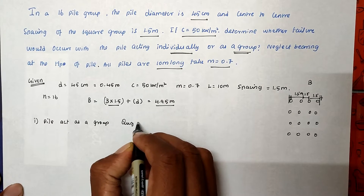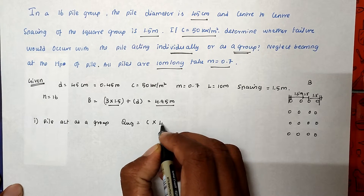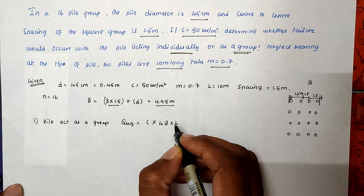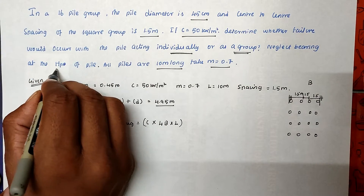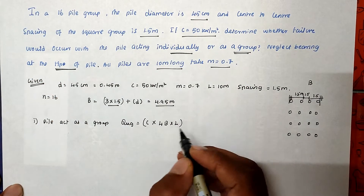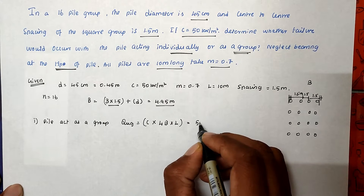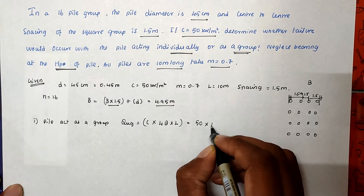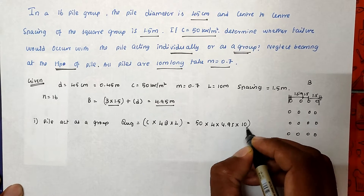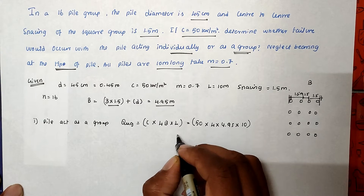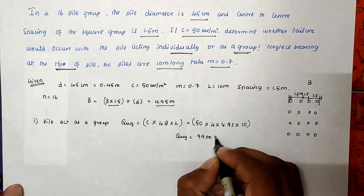Now Q_UG (group bearing capacity) uses the formula: Q_UG = C × 4B × L, considering only friction action. Substituting: Q_UG = 50 × 4 × 4.95 × 10 = 9900 kN.